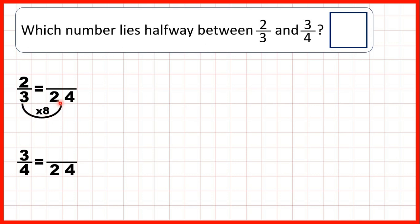Three times eight is 24, two times eight is 16, four times six is 24, and three times six is 18. Now we know the number in the middle of 16 and 18 is 17, so that must be 17 over 24 right in the middle or halfway between two-thirds and three-quarters.